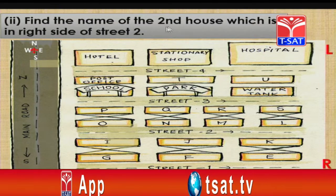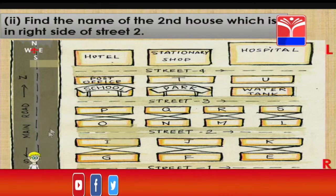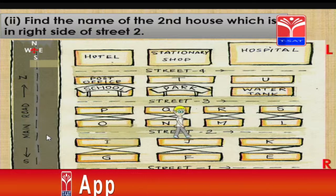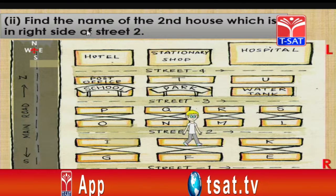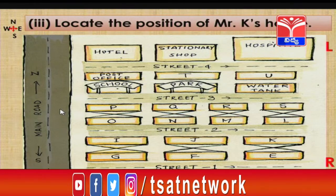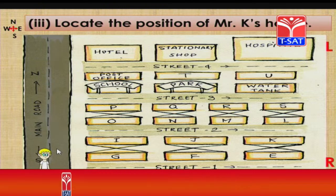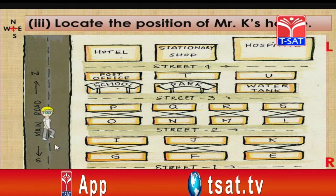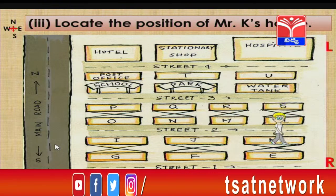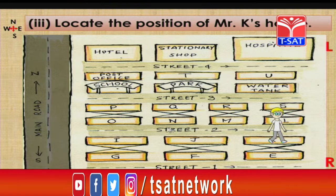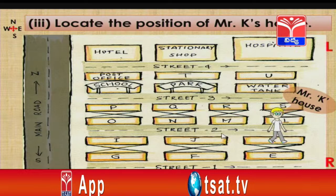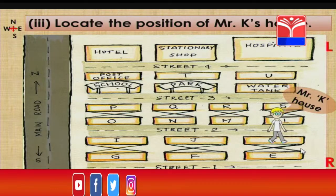Second question: find the name of the second house on the right side of street number 2. The person moves along street number 2 in the east direction - the second house on the right side is Mr. J's house. Now look at the position of Mr. K's house. The person moves north to street number 2, enters eastward - the right side third object, counting 1, 2, 3, is Mr. K's house. So the address is: street number 2, right side, third object.